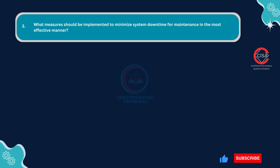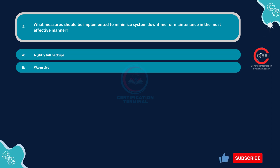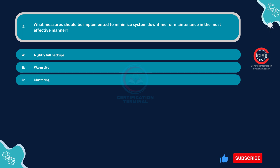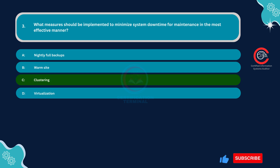Question number three: What measures should be implemented to minimize system downtime for maintenance in the most effective manner? Option A: Nightly full backups. Option B: Warm site. Option C: Clustering. Option D: Virtualization. The correct answer is Option C: Clustering.